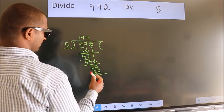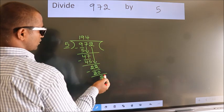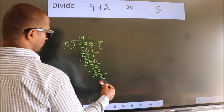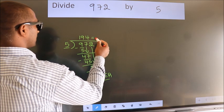Now we subtract, we get two. No more numbers to bring down, so we stop here. This is our remainder. This is our quotient.